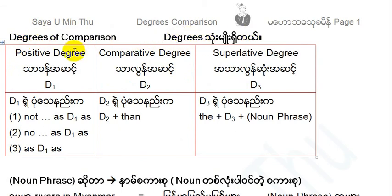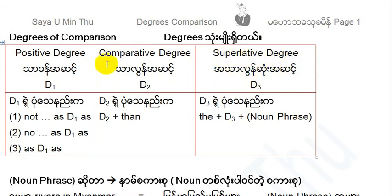Positive degree is D1. Comparative degree is D2. Superlative degree is D3. Positive degree is D1, comparative degree is D2, superlative degree is D3.